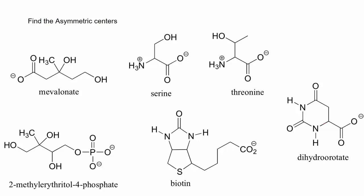We're looking for sp3 hybridized carbons, so I'm going to start by crossing out the sp2 hybridized carbons. All of these carbonyls are sp2 hybridized, so they will not be stereocenters. Now looking at the sp3 hybridized carbons — if a carbon shows two bonds, the other two are hydrogens. Since all atoms of the same element have the same properties, two hydrogens means this cannot be an asymmetric center. This methylene group is also not an asymmetric center.